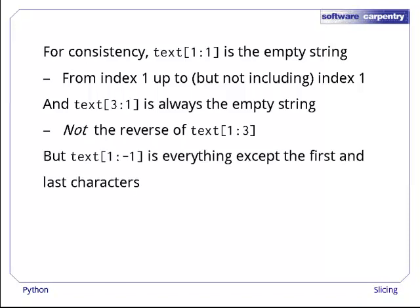However, when we compare bounds, we have to remember that negative indices count backward. text[1:-1] is everything except the first and last characters of the string, because the index -1 means the next to last legal index of the sequence. It may look odd, but it's consistent.